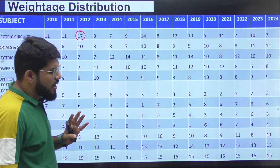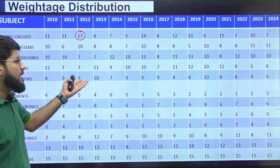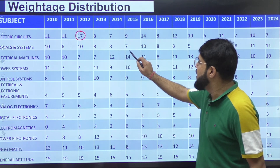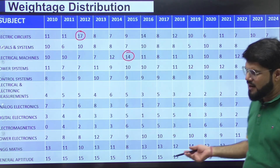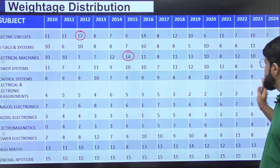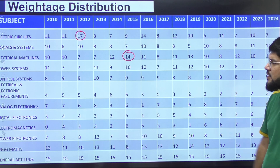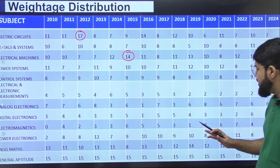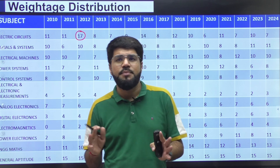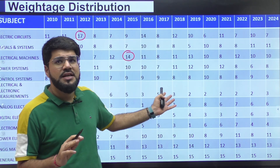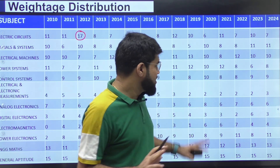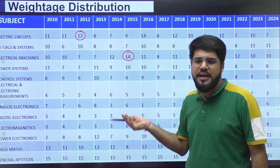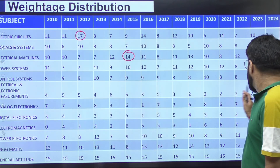Machines, being a core subject, easily around 10 marks is the expected figure, although in some years it can be as high as 14. Power systems: similar trend, around 10 to 11 marks, sometimes 9. Control systems: around 8 to 9 marks most years, sometimes up to 10. Measurements: earlier it was coming up to 4 to 6 marks, but in recent usual trends it's 2 to 3 marks — just one or two questions. This is a subject for EE where you can push it to the end, because time is required by the subject but the weightage is very low.